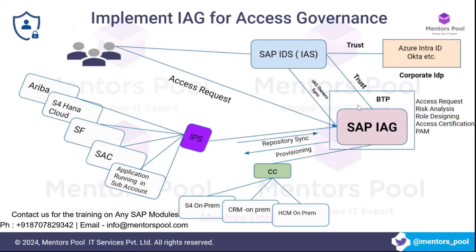This is what IEG does. It utilizes IAS for authentication and authorization of different owners in IEG, and it takes the help of IPS to integrate with cloud systems. The access governance tool runs in a BTP sub-account; using Cloud Connector it integrates with on-premise systems, and using IPS it integrates with cloud systems. IAS manages the authorization of people accessing IEG through groups mapped to role collections on BTP. Corporate identity providers can also be set up for delegated authentication.